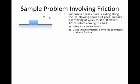If we say that this particular hockey puck is initially moving at a speed of 20 meters per second and it steadily slows down over the next 120 meters before coming to a halt, I can ask a set of questions including what is its acceleration during this time, and using that information, can we derive the coefficient of kinetic friction as the hockey puck is sliding along the ice?